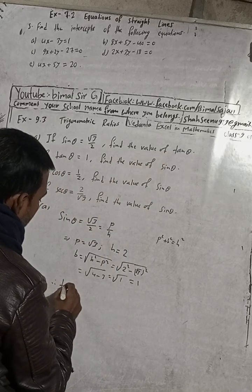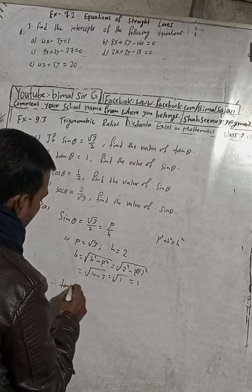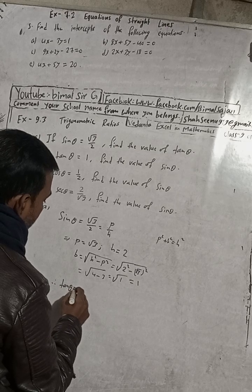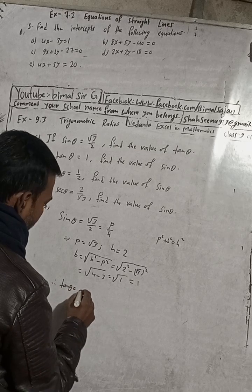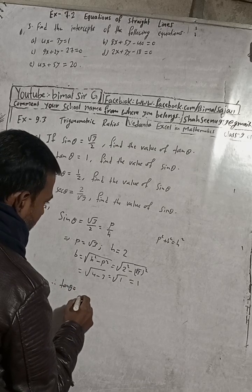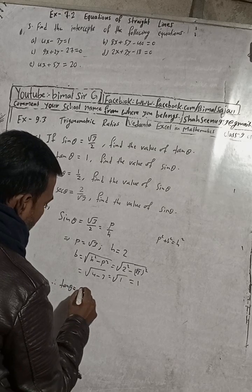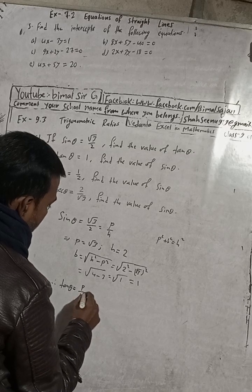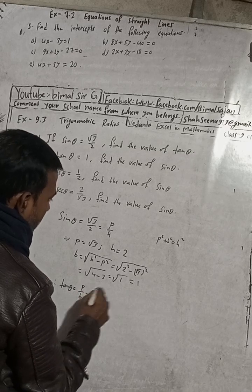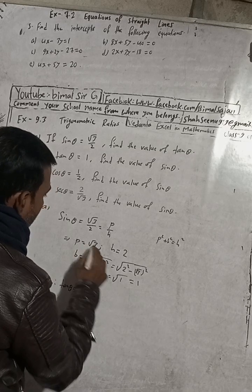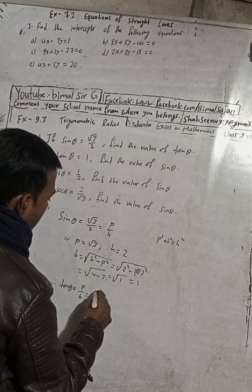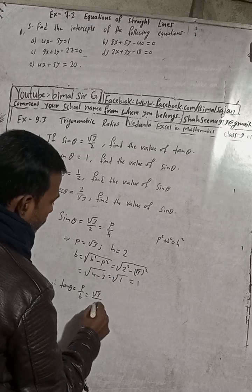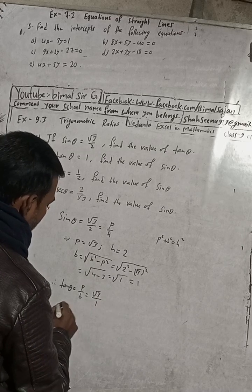Now find the value of tan θ. Therefore, tan θ is equal to P by B. P is equal to √3 and B is equal to 1, so tan θ is equal to √3.